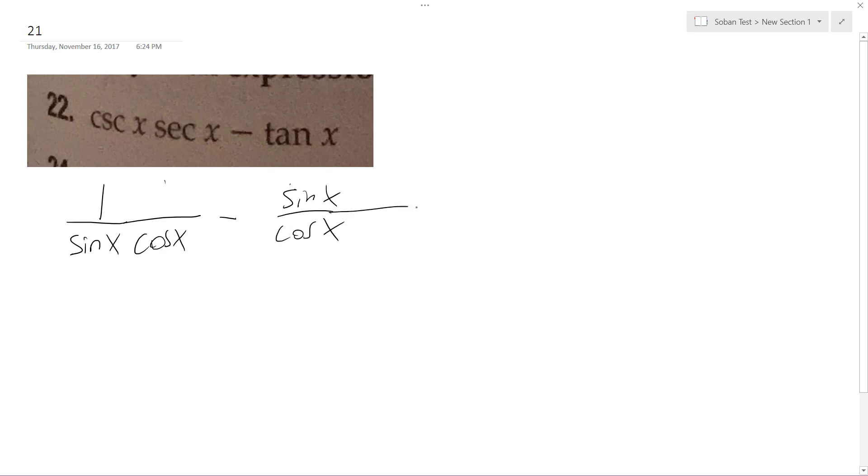So I can combine these together, I'll add a denominator of sine of x and sine of x on the top. Now I can combine them so it becomes 1 minus sine squared x over sine x cosine x.